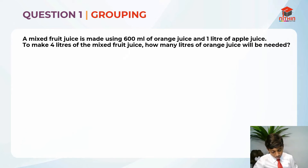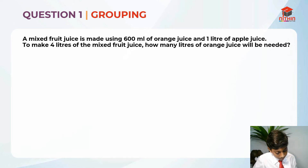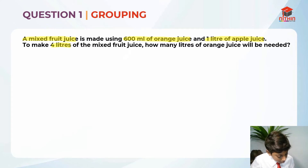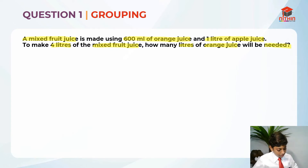Do you remember? After we are done reading the question, what should we do? We should highlight the key information. So, a mixed fruit juice is made using 600 ml of orange juice and 1 liter of apple juice. To make 4 liters of mixed fruit juice, how many liters of orange juice will be needed? This is the question.